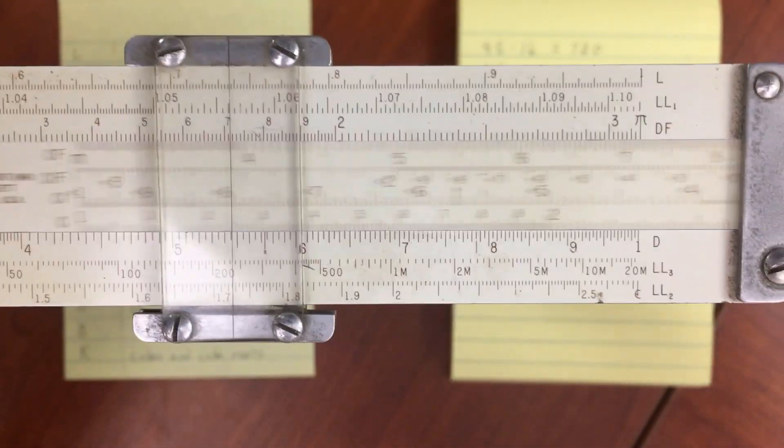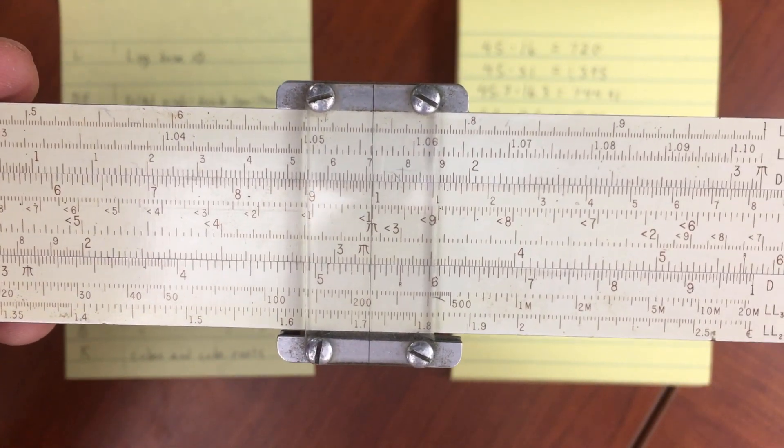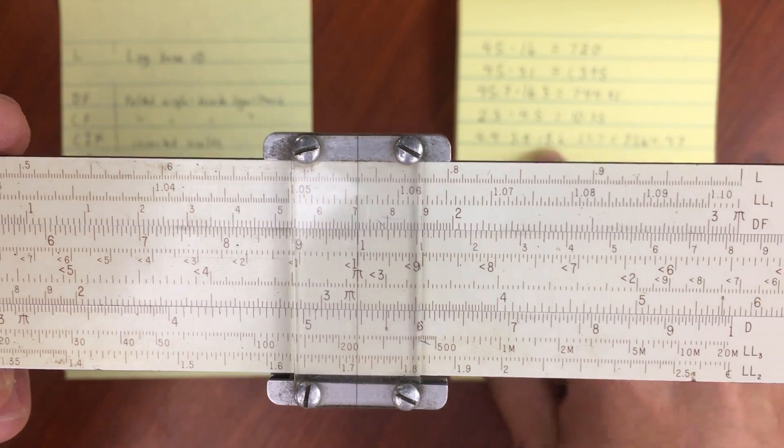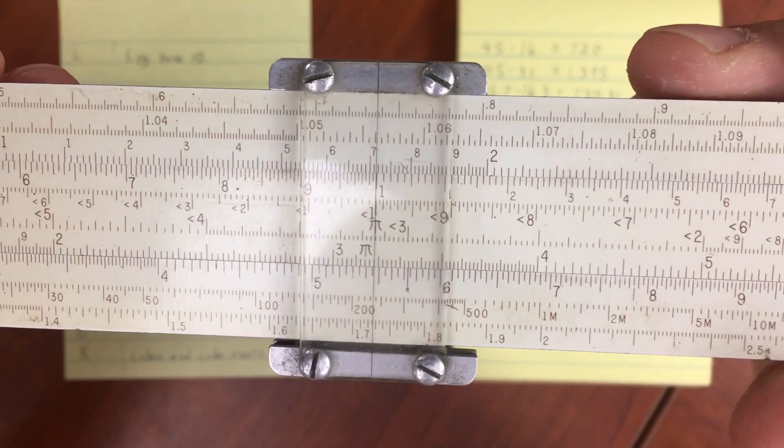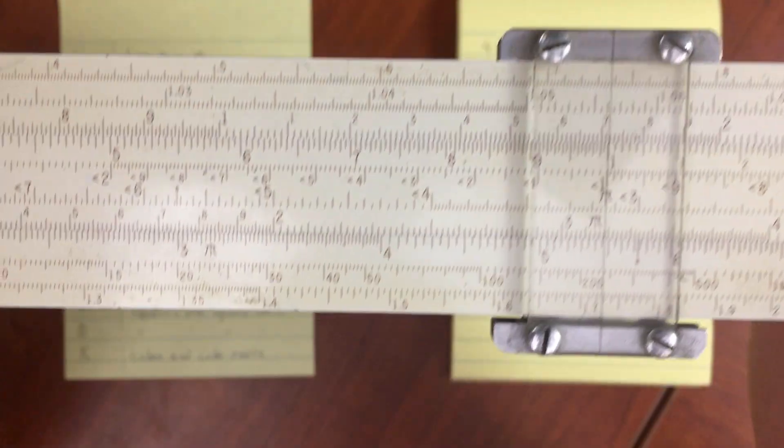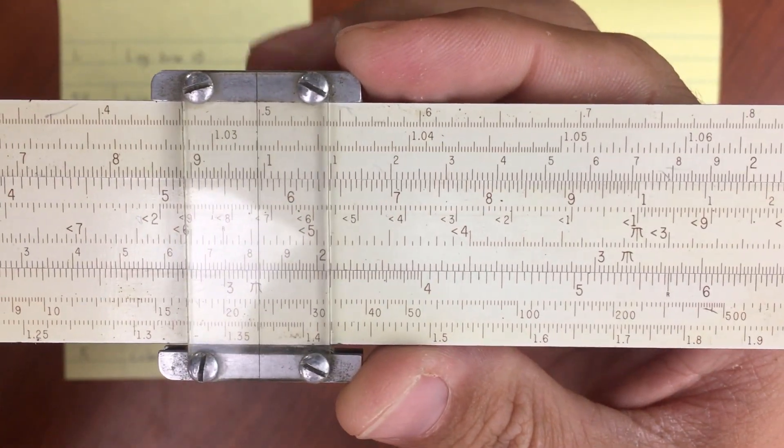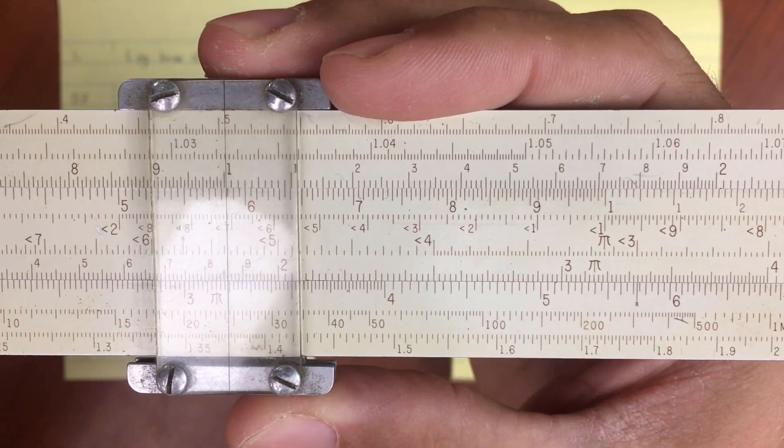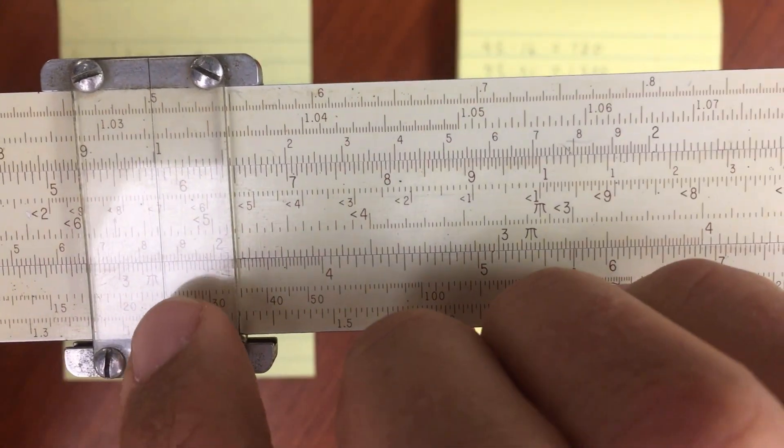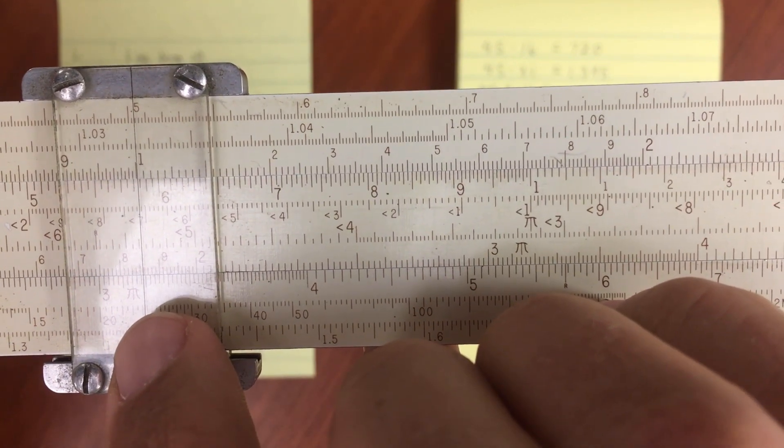But remember, we're using the folded scale. So we'll move the 1 on our folded scale over to that hairline that we've just moved. Our next number is going to be 18.6. So that's 1, 8, 6. And let's see. Let's fold it back into this guy. So we're going to do that times 18.6. So now I'm back on the regular C scale. So now I'm somewhere around 3.029 or something like that. Or 3.19.